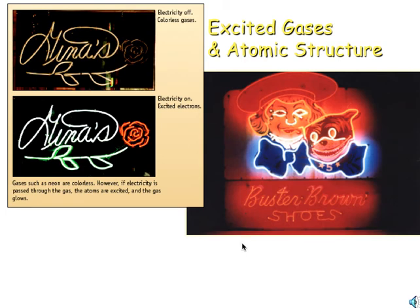So how does this all relate back to atoms and atomic structure? Well, neon lights. These are actually where you put energy into the element neon and it glows. It gives off color. So how does this work?